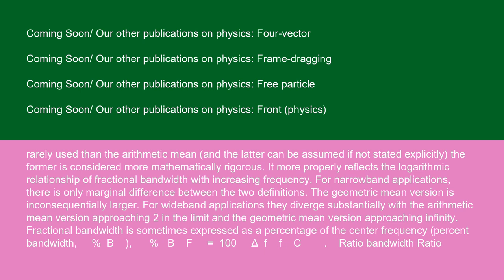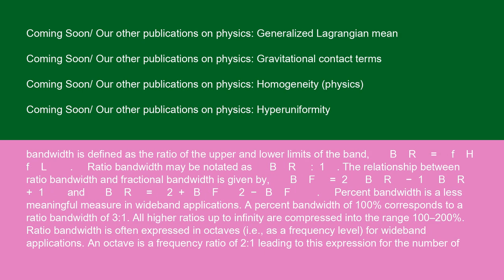For wideband applications, they diverge substantially with the arithmetic mean version approaching 2 in the limit and the geometric mean version approaching infinity. Fractional bandwidth is sometimes expressed as a percentage of the center frequency, percent bandwidth, percent B. Percent BF equals 100 delta F over FC. Ratio bandwidth: ratio bandwidth is defined as the ratio of the upper and lower limits of the band. BR equals FH over FL. Ratio bandwidth may be notated as BR colon 1. The relationship between ratio bandwidth and fractional bandwidth is given by BF equals 2 times BR minus 1 over BR plus 1 and BR equals 2 plus BF over 2 minus BF. Percent bandwidth is a less meaningful measure in wideband applications. A percent bandwidth of 100% corresponds to a ratio bandwidth of 3 to 1.